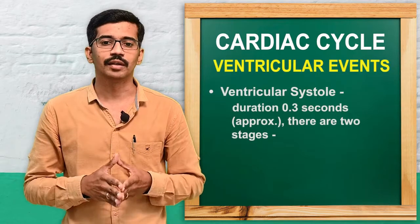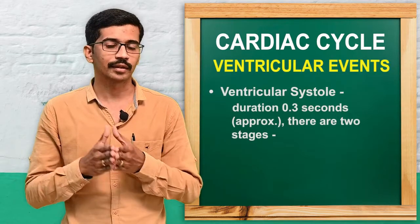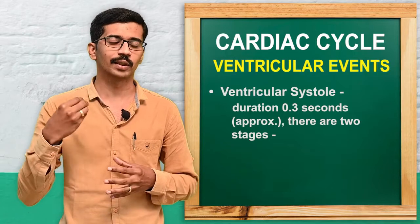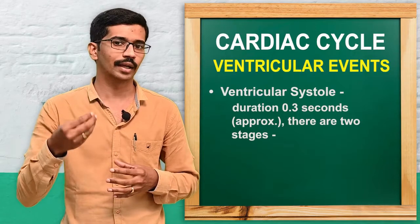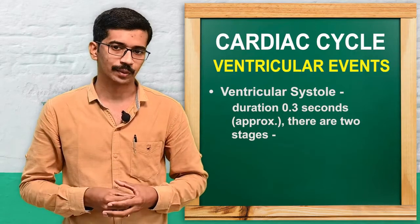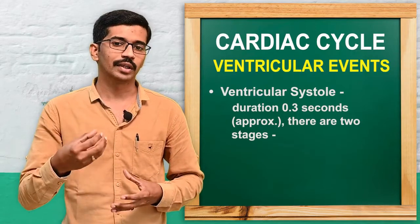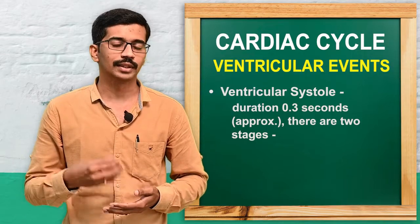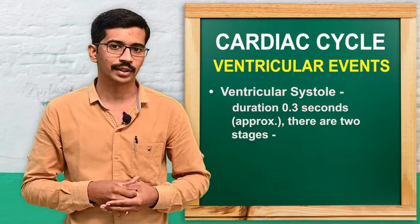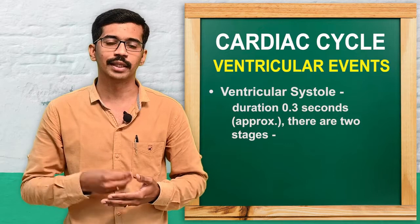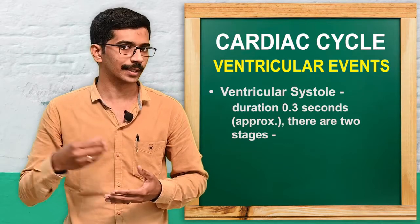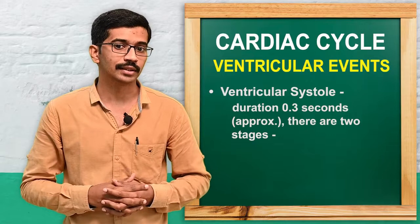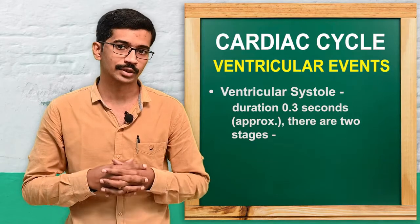Now we will move to the ventricular events. In ventricular events, there is a ventricular systole and a ventricular diastole. The duration of ventricular systole is approximately 0.3 seconds, and there are two stages in ventricular systole: the first one is isometric contraction and the second one is the ejection period.